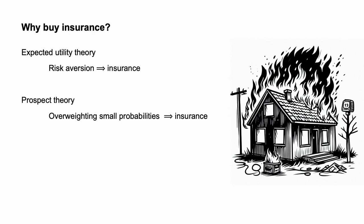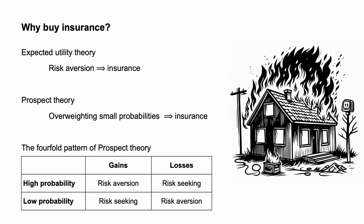Prospect theory provides an alternative explanation. The purchase of insurance involves a certain loss — the premium — or a gamble involving the possibility of either a large loss or the status quo. As prospect theory has people as risk-seeking in the loss domain, we would not expect them to purchase insurance. However, under prospect theory, people also overweight small probabilities. This overweighting of small probabilities can make the purchase of insurance attractive, even though it is in the loss domain. This combination of the loss domain with a small probability is the bottom right quadrant of the fourfold pattern of risk attitudes generated by prospect theory. People tend to be risk-averse in this circumstance.